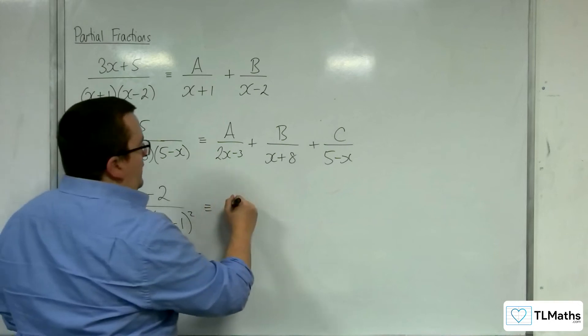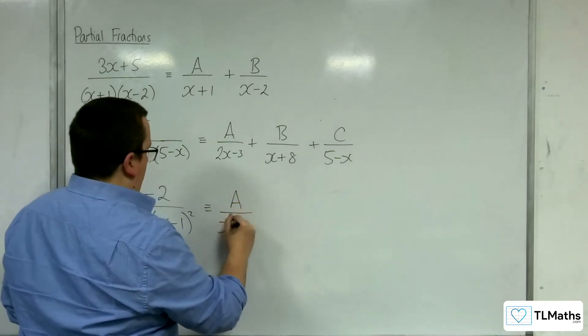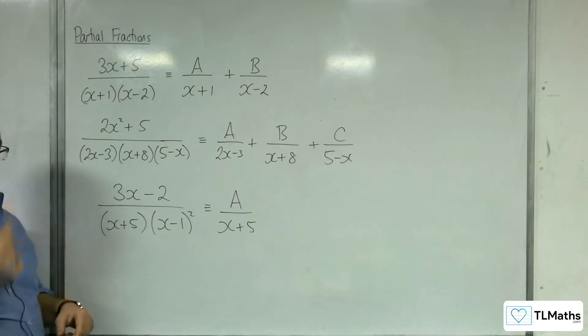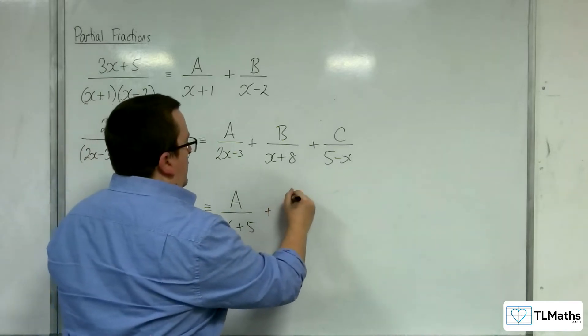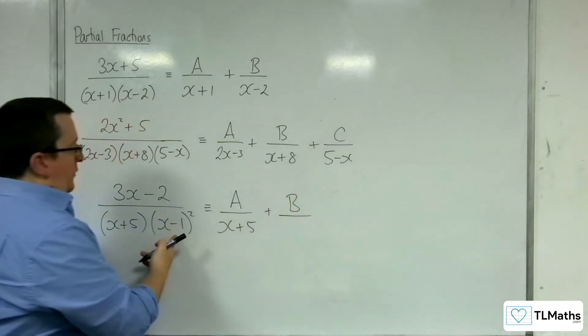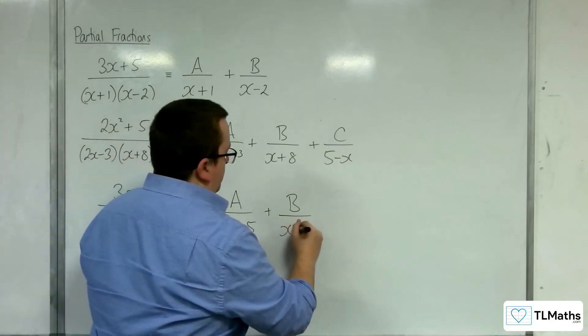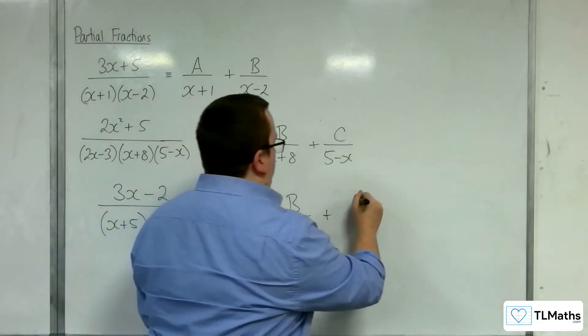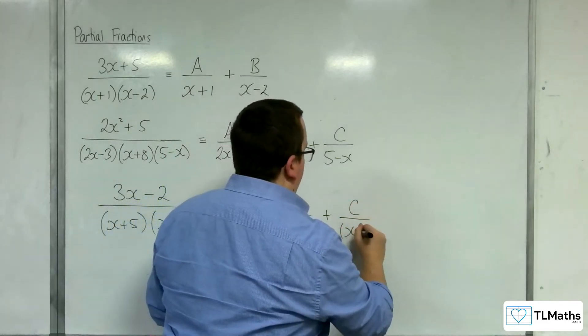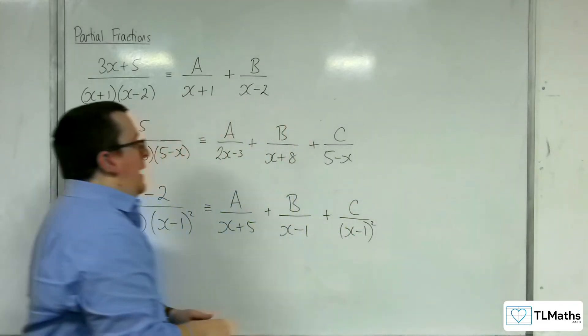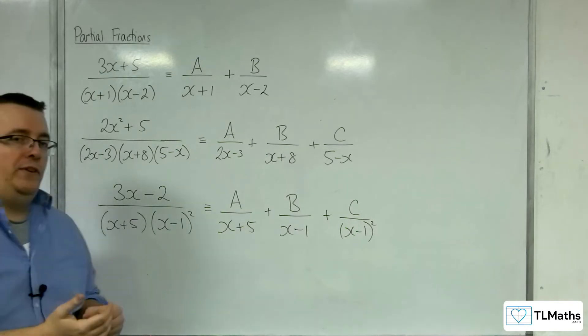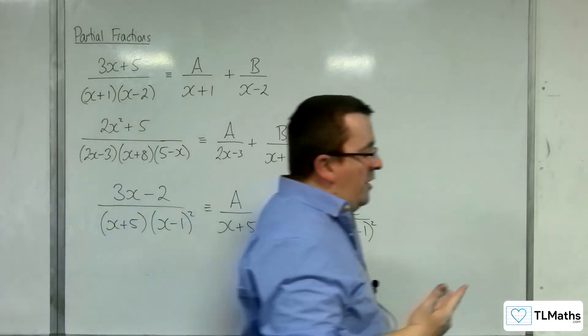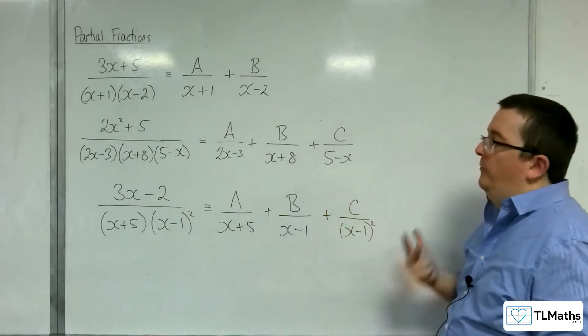We should know that we need to split that up into A over x+5, to deal with that bracket, plus we're going to need B over x-1 plus C over (x-1)². And then be able to find the A, B, and C from that. So these are the three types that you should know up to this point.